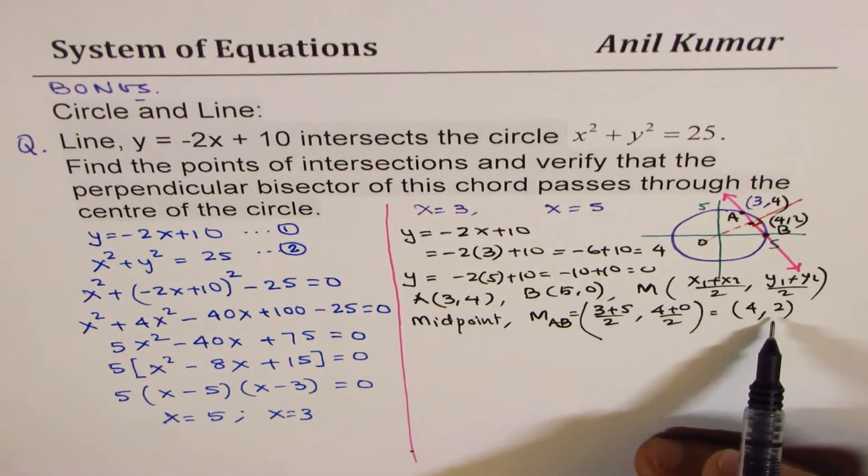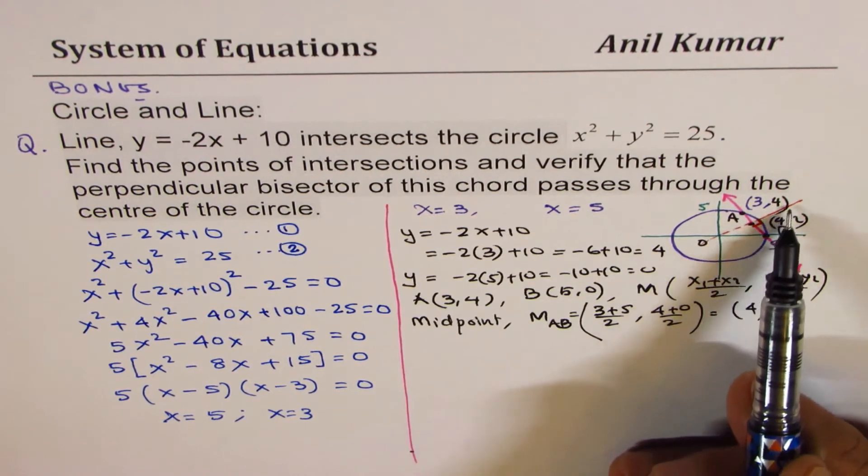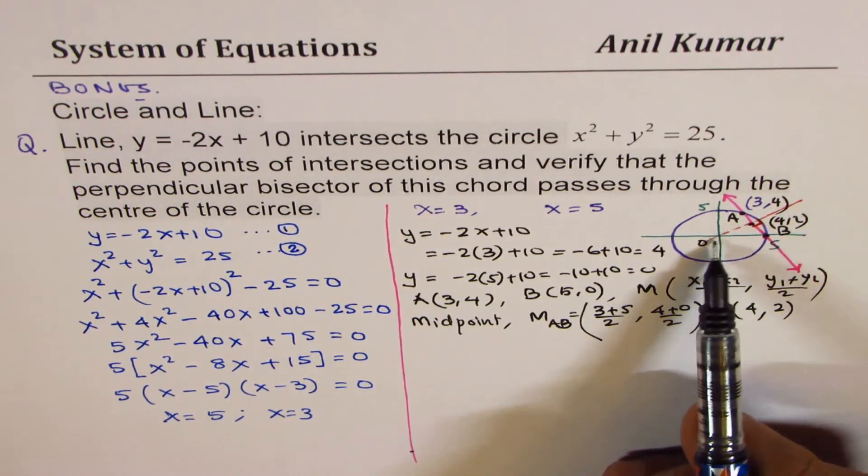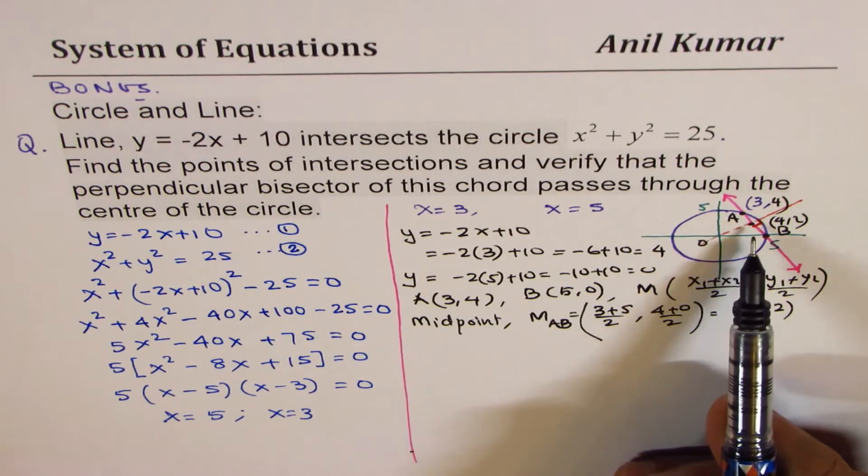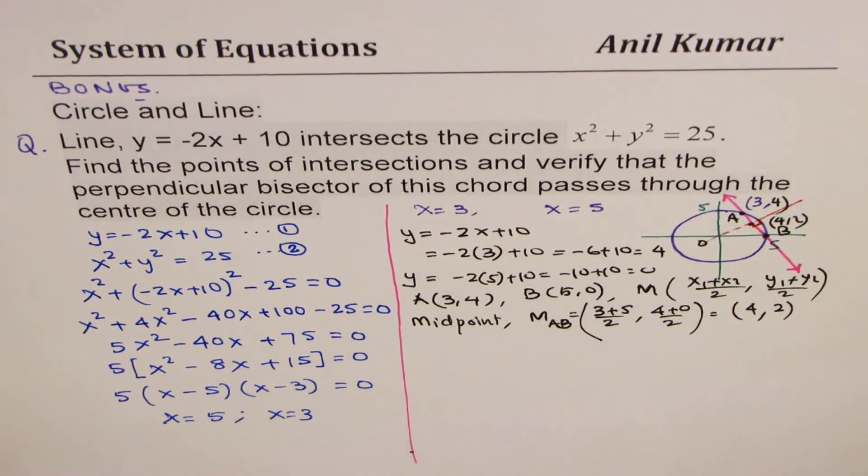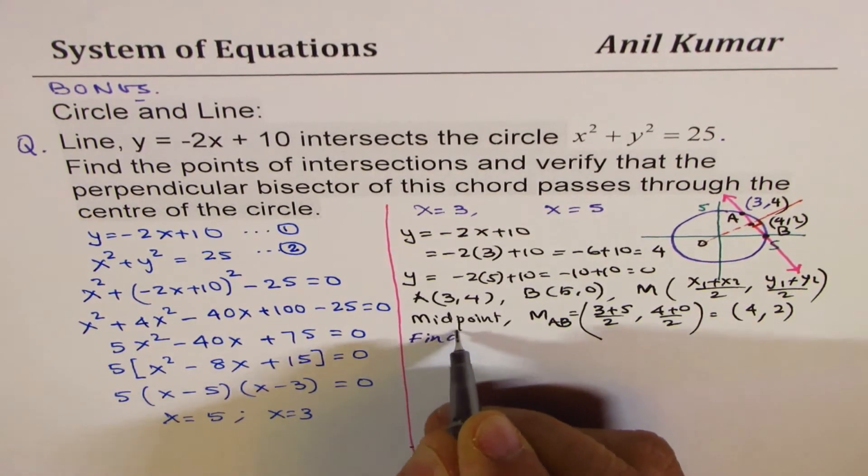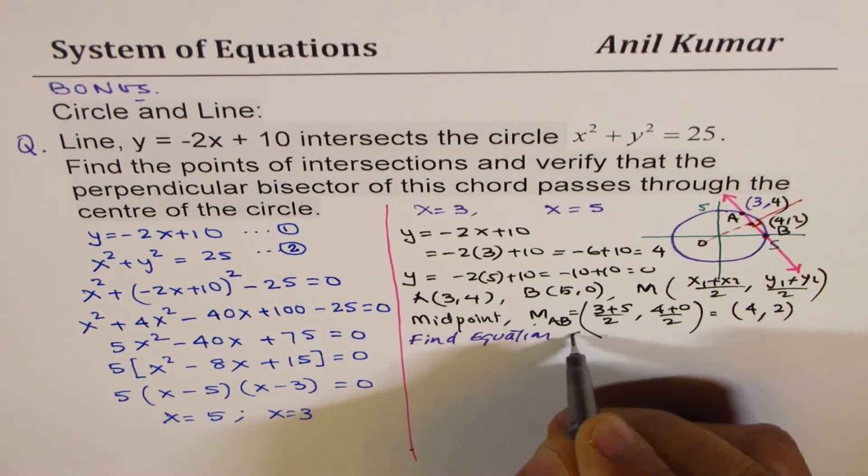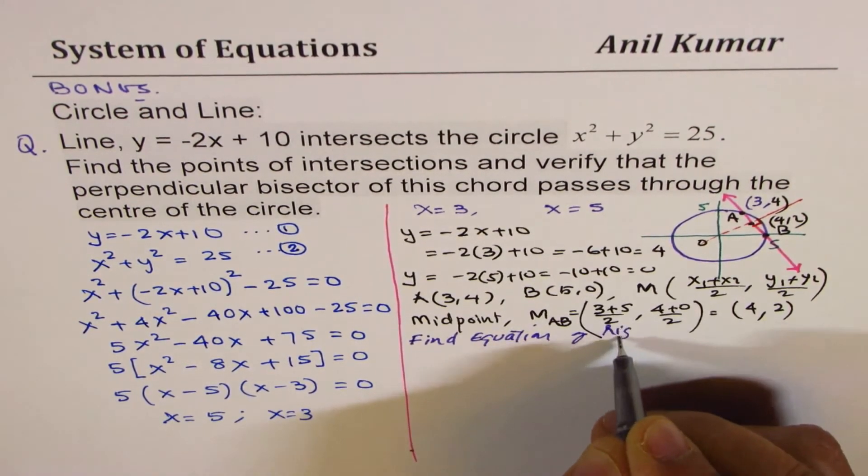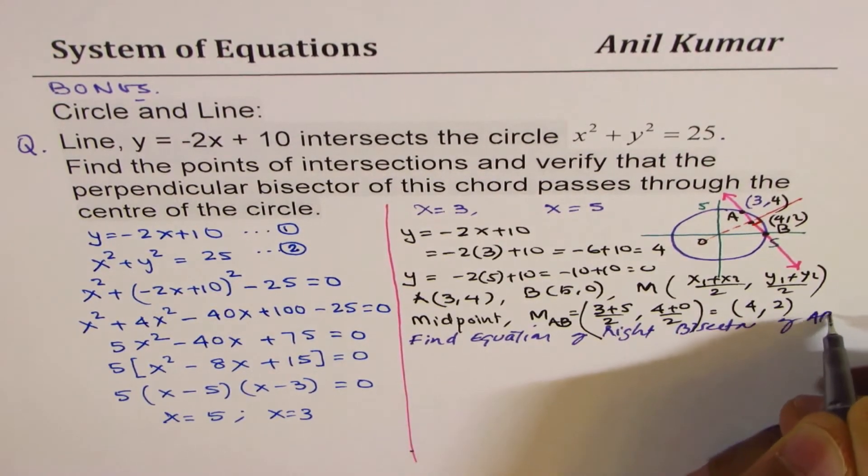Now we know the midpoint, we need to prove that the right bisector actually goes through the origin. So there are a couple of ways. What we can do is we can find the equation of right bisector. That's the best way. So now we'll find equation of right bisector of AB.